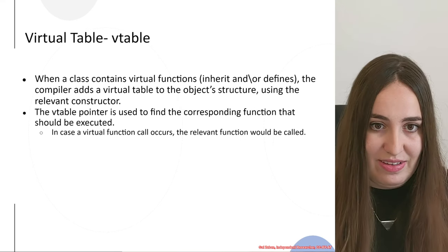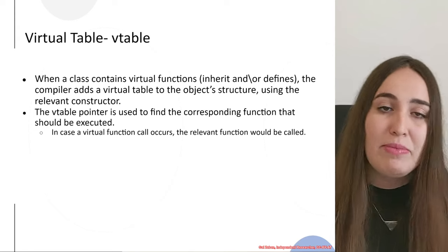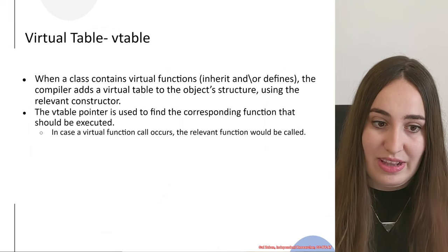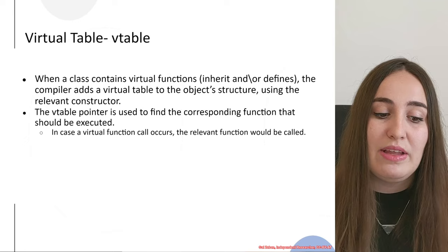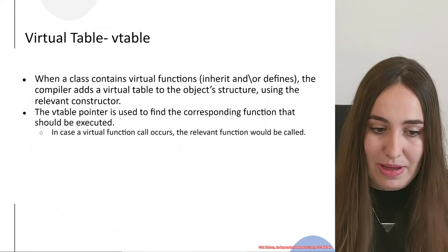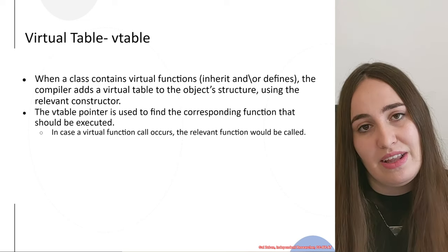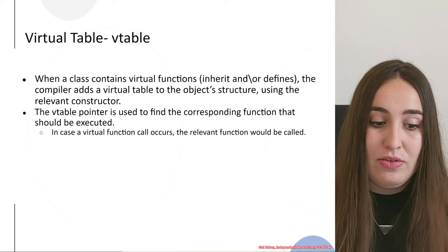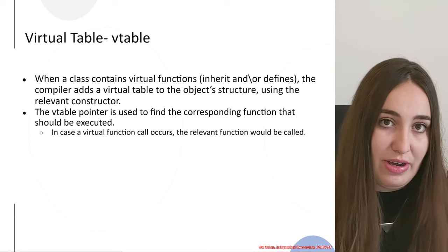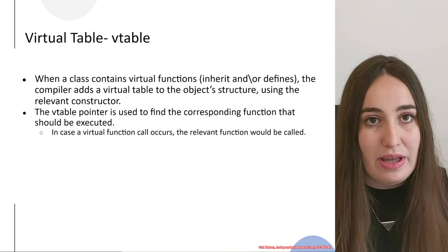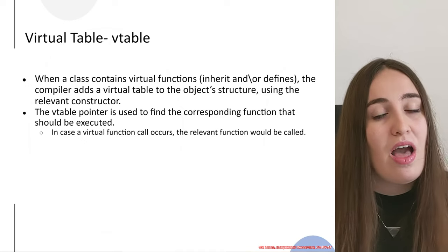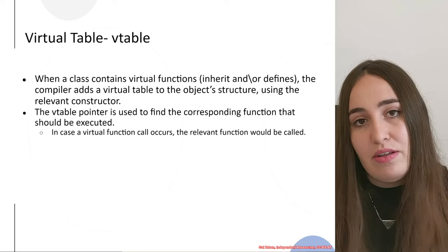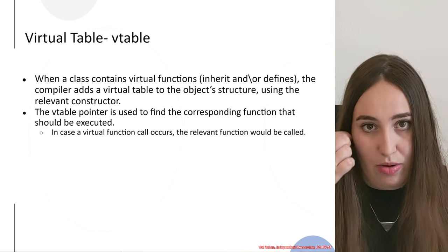First we need to discuss virtual tables. I briefly talked about what the vtable is, but we will dive into it more thoroughly this time. The vtable is used to support dynamic dispatch — finding the right function to execute when doing a virtual call. For every class that inherits or defines virtual functions, we have a vtable set in the first 8 or 4 bytes of the object structure in memory, done via the object's constructor.